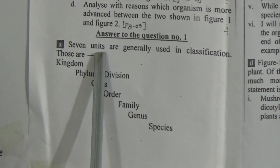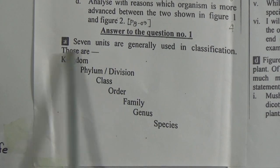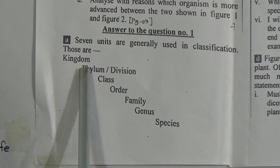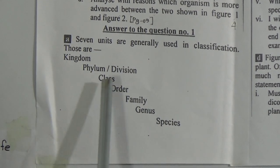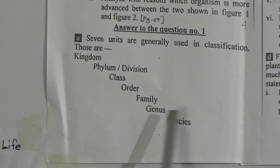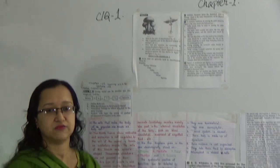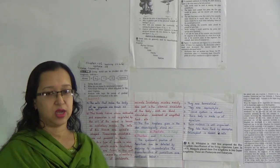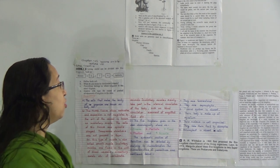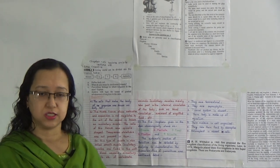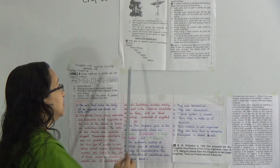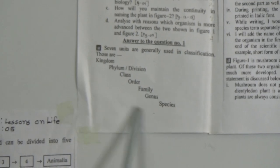Answer: Seven units are generally used in classification. Those are kingdom, phylum or division, class, order, family, genus, and species. When you write these unit names — that means the units of classification — you have to maintain this serial order.